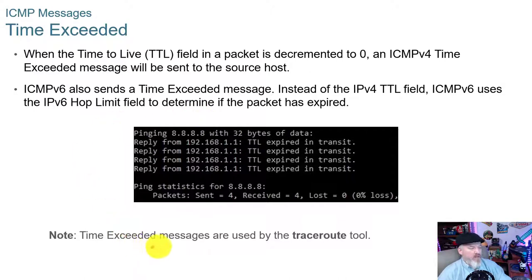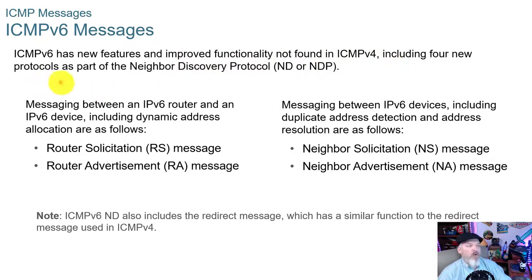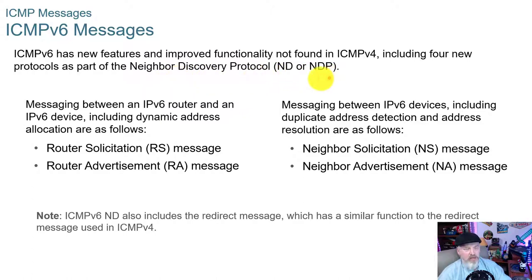Time exceeded messages are also used by the traceroute tool. ICMPv6 has new features and improved functionality not found in v4, including four new protocols as part of the Neighbor Discovery Protocol, also called ND or NDP.